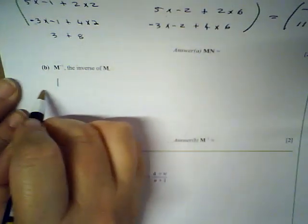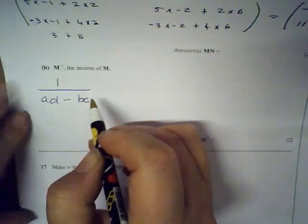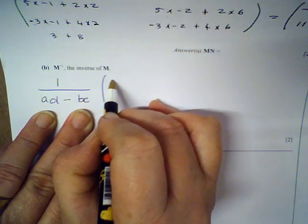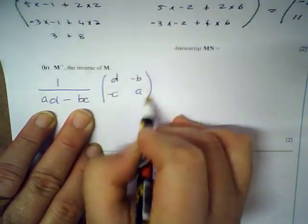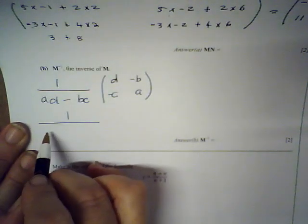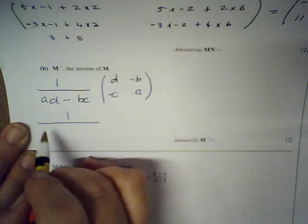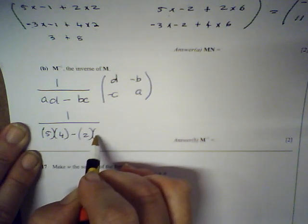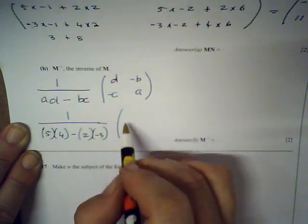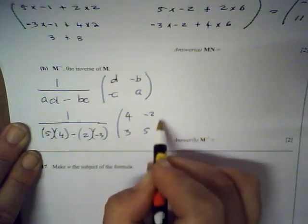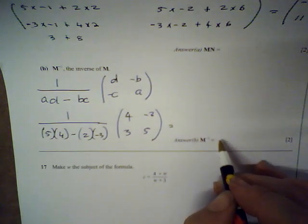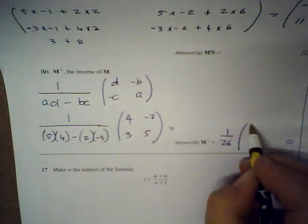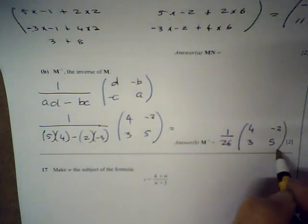For the inverse of matrix M = [[5, -3],[2, 4]]: the formula is (1/(ad-bc)) × [[d, -b],[-c, a]]. So ad - bc = 5×4 - (-3)×2 = 20 + 6 = 26. The inverse is (1/26) × [[4, 3],[-2, 5]].